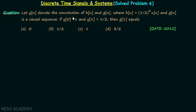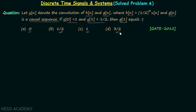Let y[n] denote the convolution of h[n] and g[n], where h[n] is equal to (1/2)^n u[n] and g[n] is a causal sequence. If y[0] is equal to 1 and y[1] is equal to 1/2, then g[1] equals: option a is 0, option b is 1/2, option c is 1, and option d is 3/2.